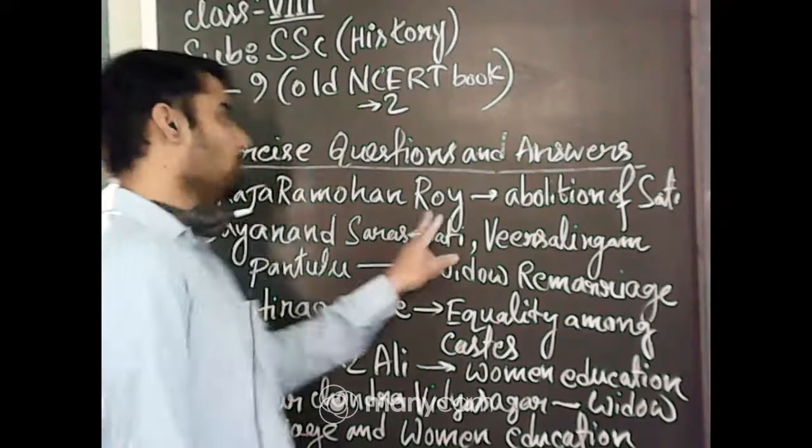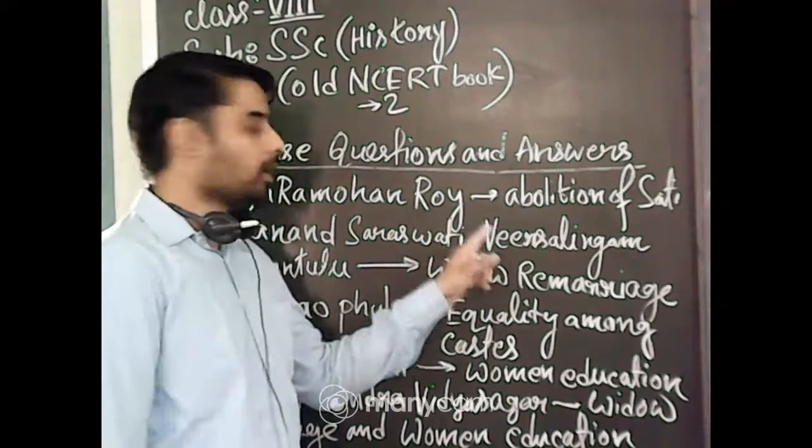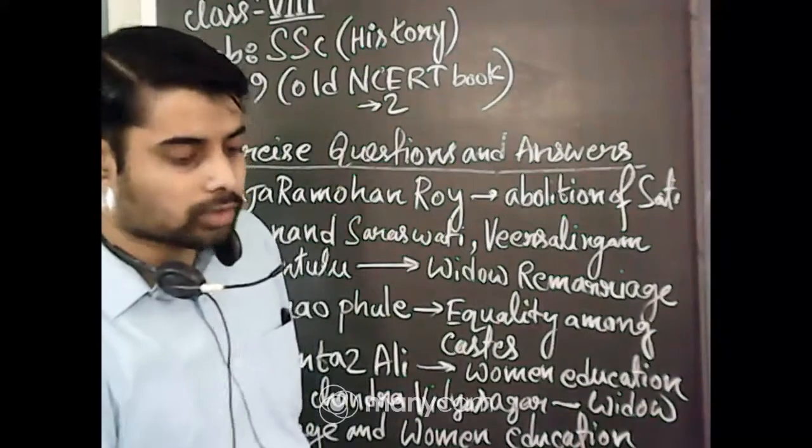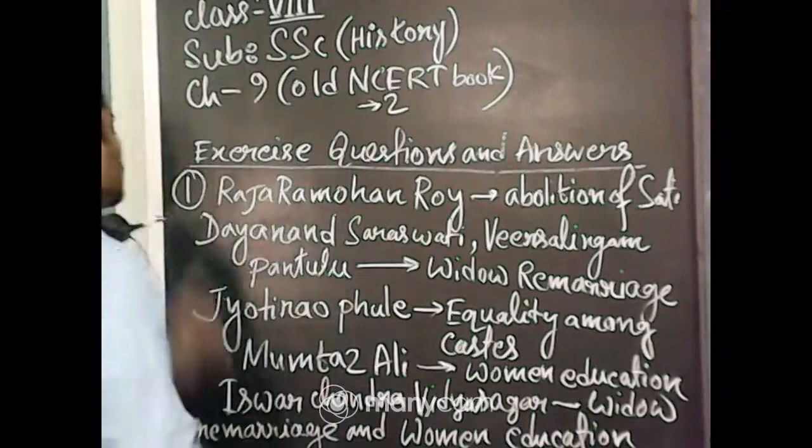Number 1, Raja Ramohan Roy. Raja Ramohan Roy associated with the abolition of Sati.